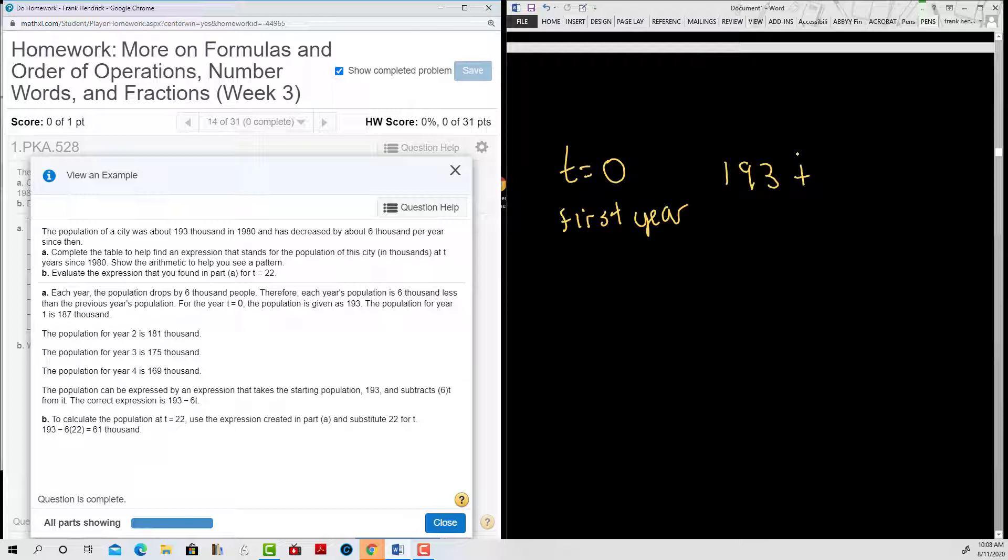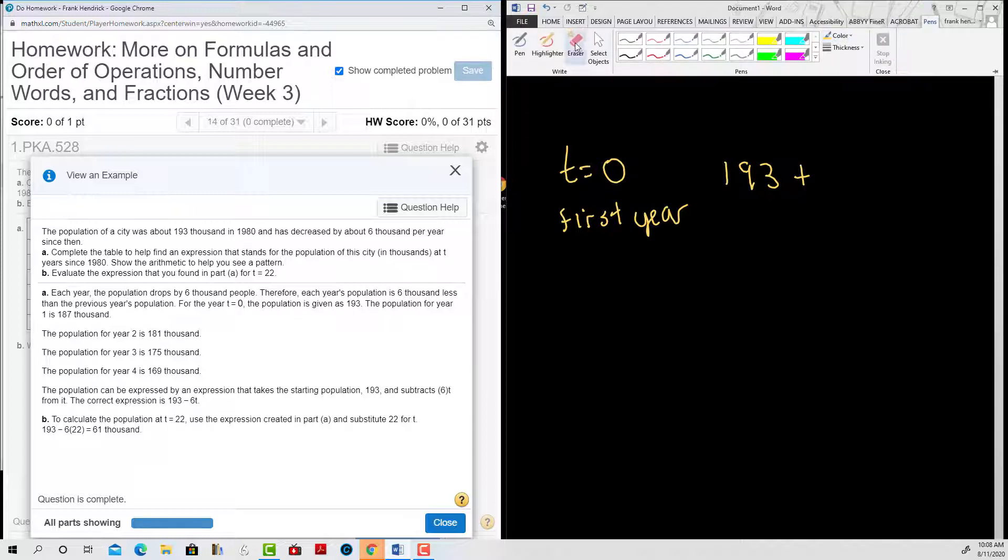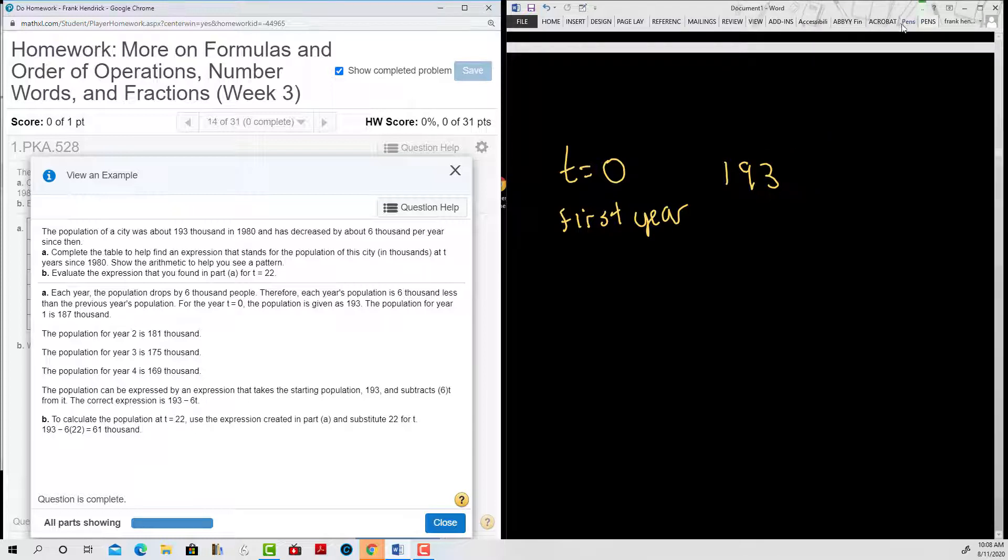And it decreased, so that will be negative there. It decreased by a particular amount, by 6,000 per year. And since this is the first year, it's going to be 0, which gives the initial year population to be 193.